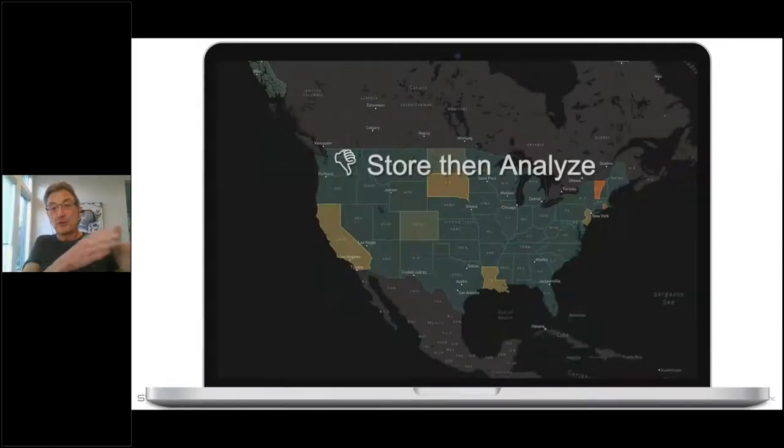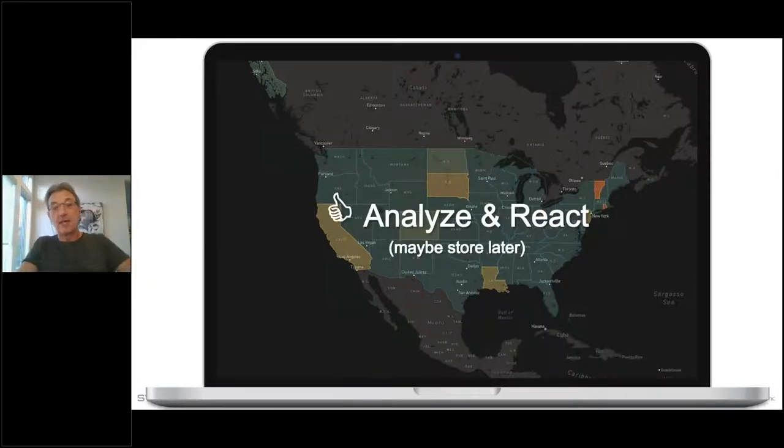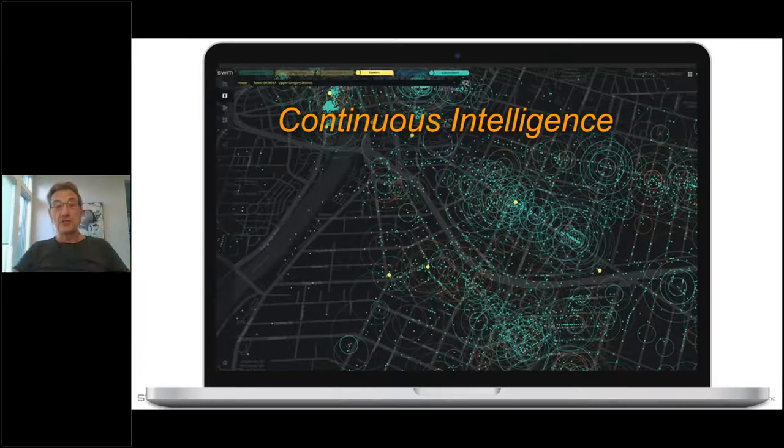This is the category where we fit, which is continuous intelligence. Our goal is to shorten the decision-making timescales into the real-time notion. So the whole notion of store and analyze in my world is a bit of a joke. We replace that with analyze and react. And if you really care about the raw data or you can afford it, then you store later. These are applications which run in memory. They have to analyze data on the fly and react. They don't think about SQL-style queries against databases because we're never going to put the data down there anyway.